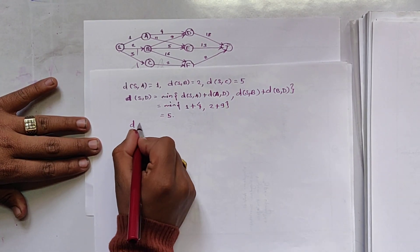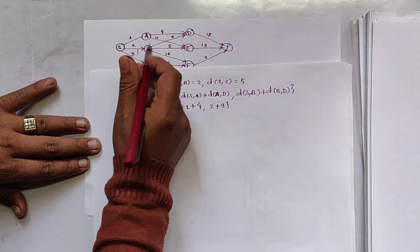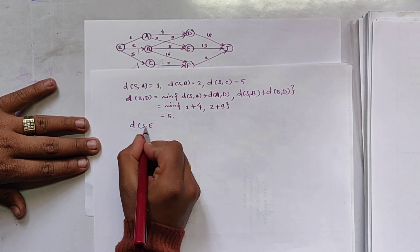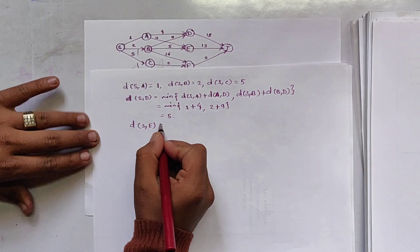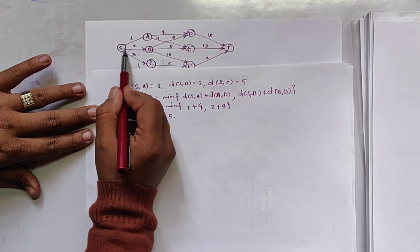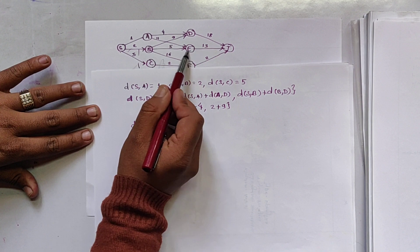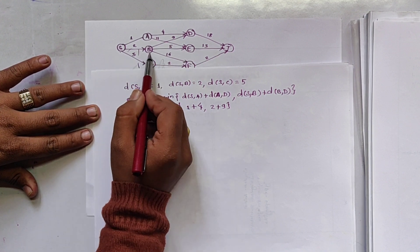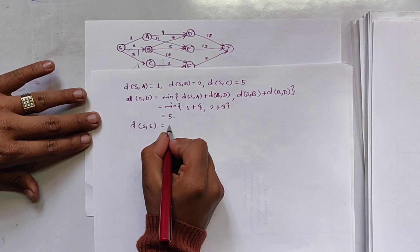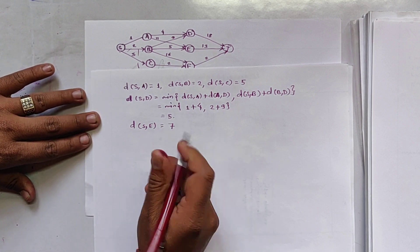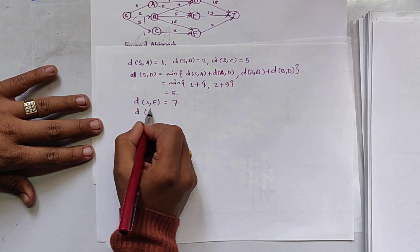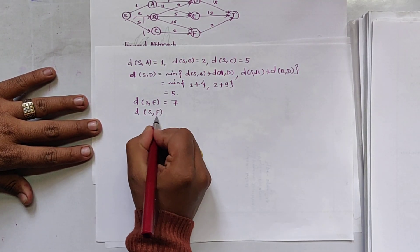Similarly, we calculate d(s,e). There are two paths: d(s,a) + d(a,e) and d(s,b) + d(b,e). We take the minimum of these two paths, and the minimum value is 7. Please calculate it yourself.